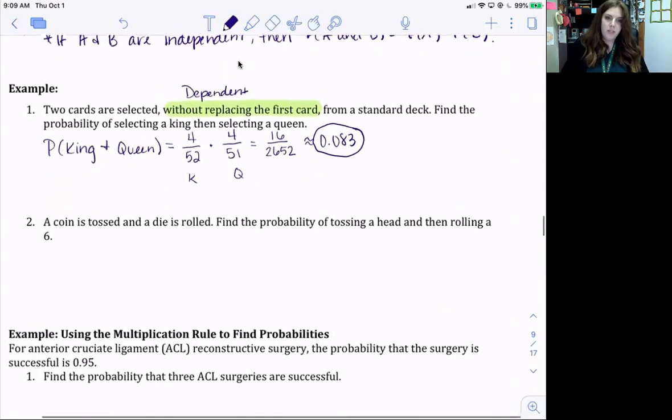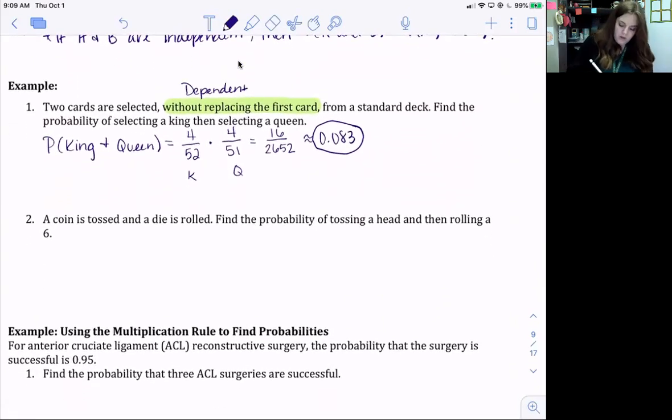All right, and our second one, a coin is tossed and a die is rolled. Those are independent. Okay, so find the probability of tossing a head and then rolling a 6.